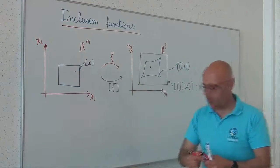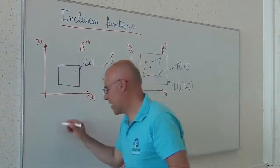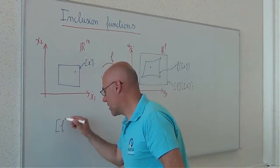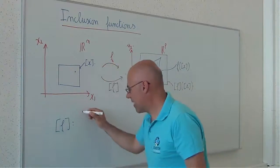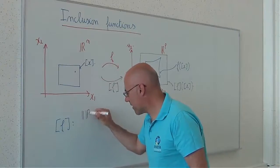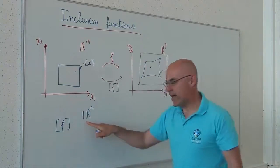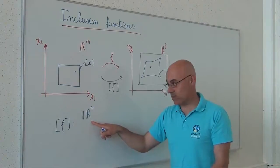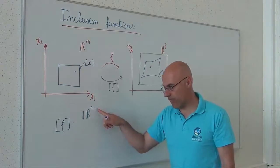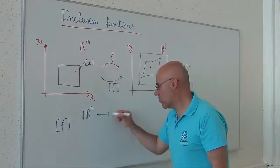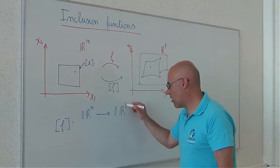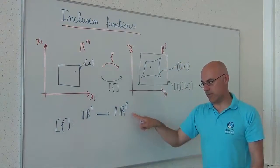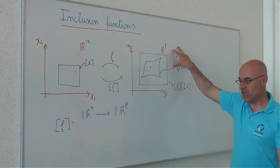More formally, how can I write this? [f] is a function from IR^n, where IR^n is the set of boxes of R^n, to the set of boxes in the image set.